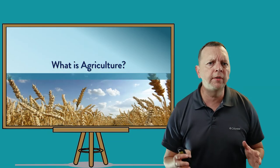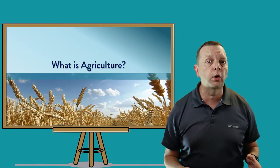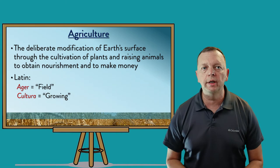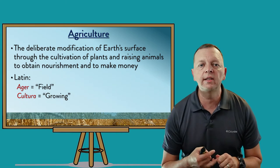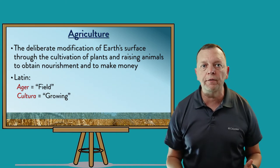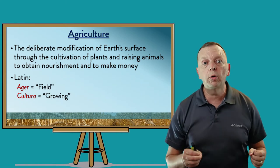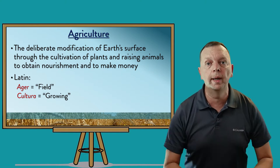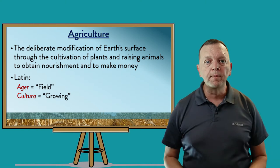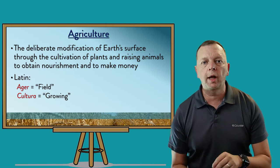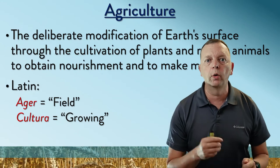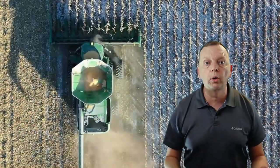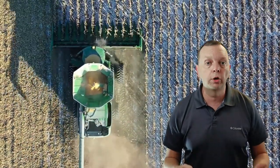Since three of these revolutions involve agriculture, let's look at what agriculture is. Agriculture's definition is that it's the deliberate modification of the Earth's surface through cultivation of plants and raising animals in order to obtain food or to be able to make money. The word agriculture comes from two Latin words: agra, which means field, and cultura, which means growing. So literally, agriculture means the growing fields.